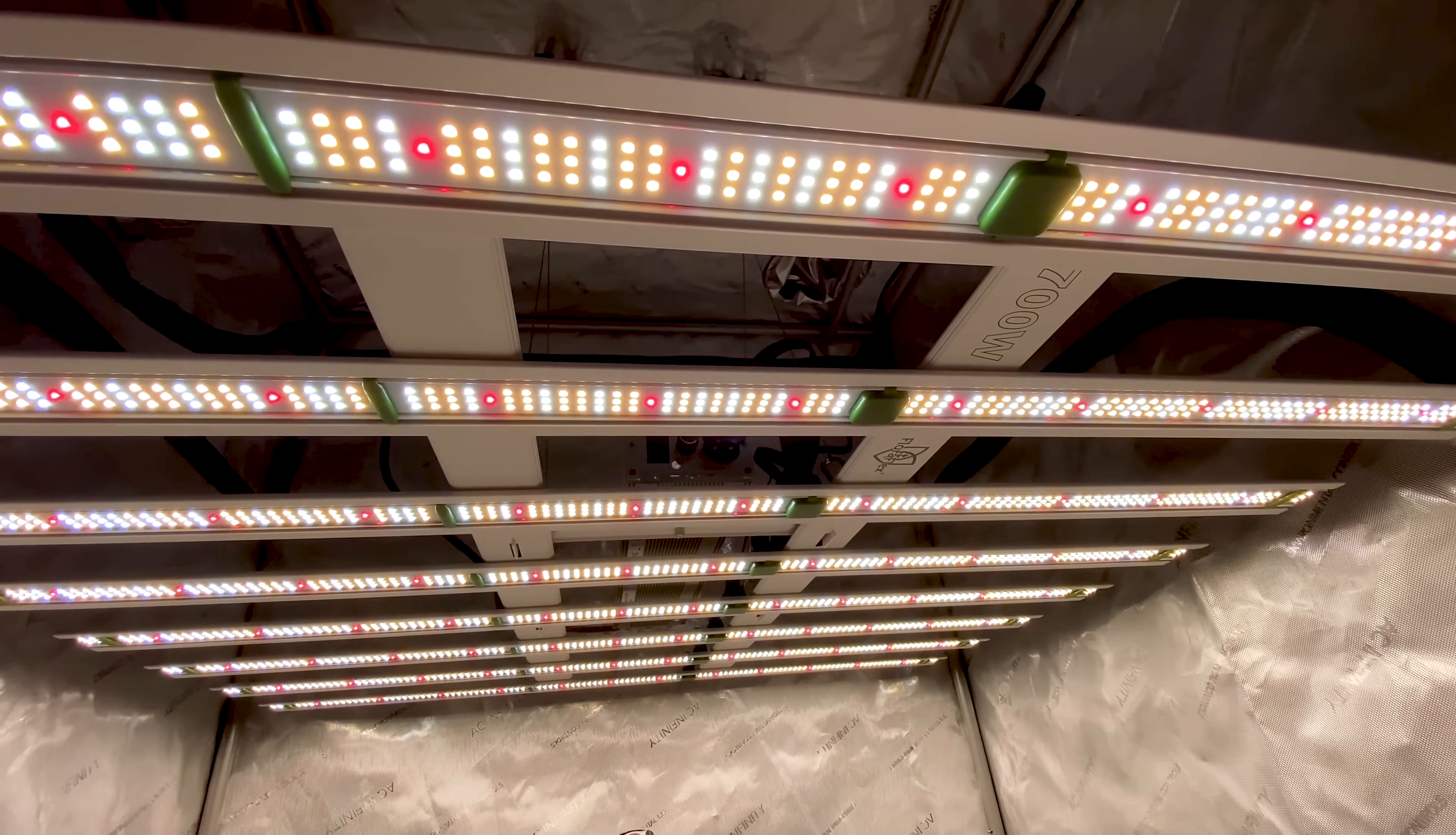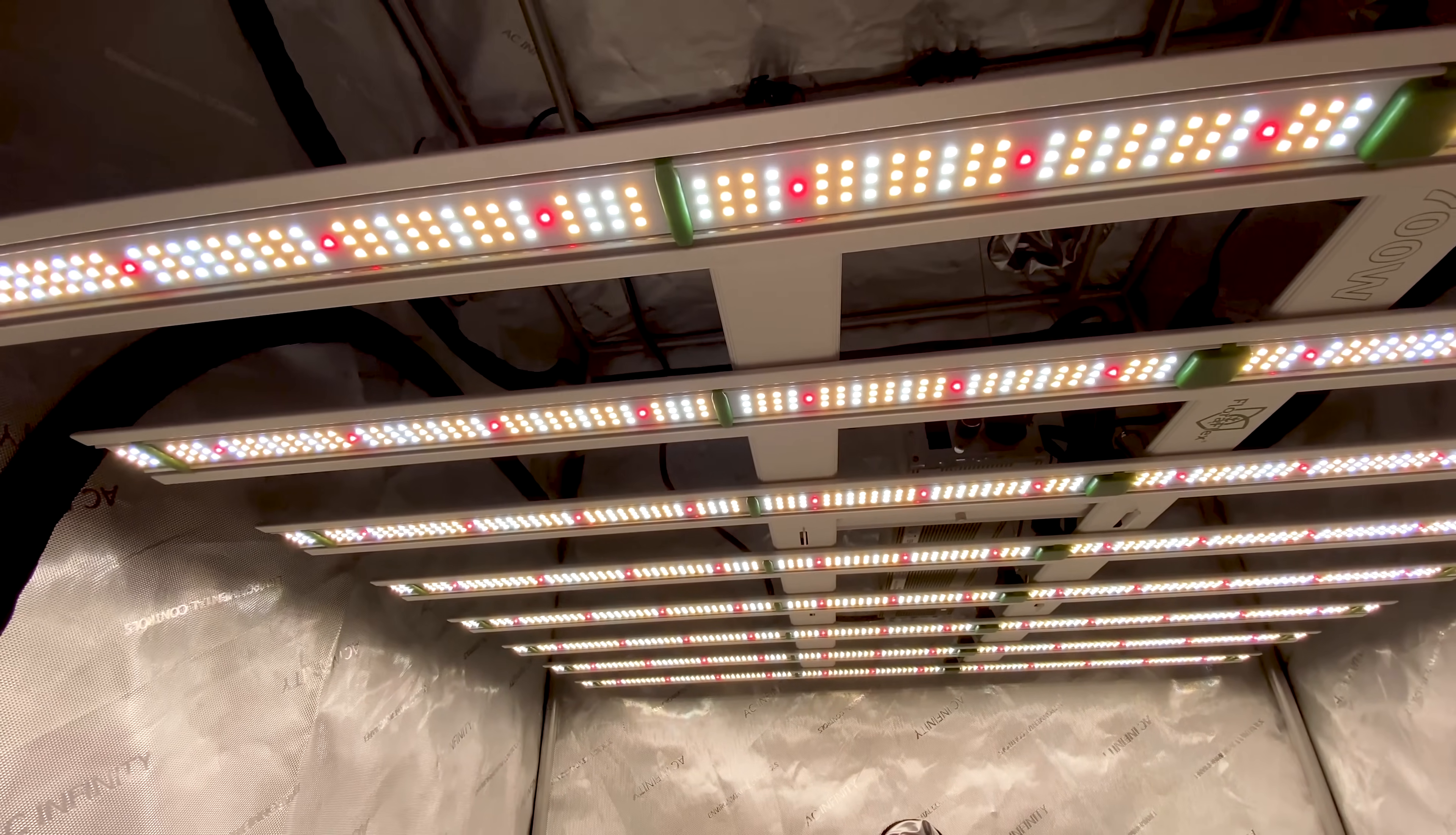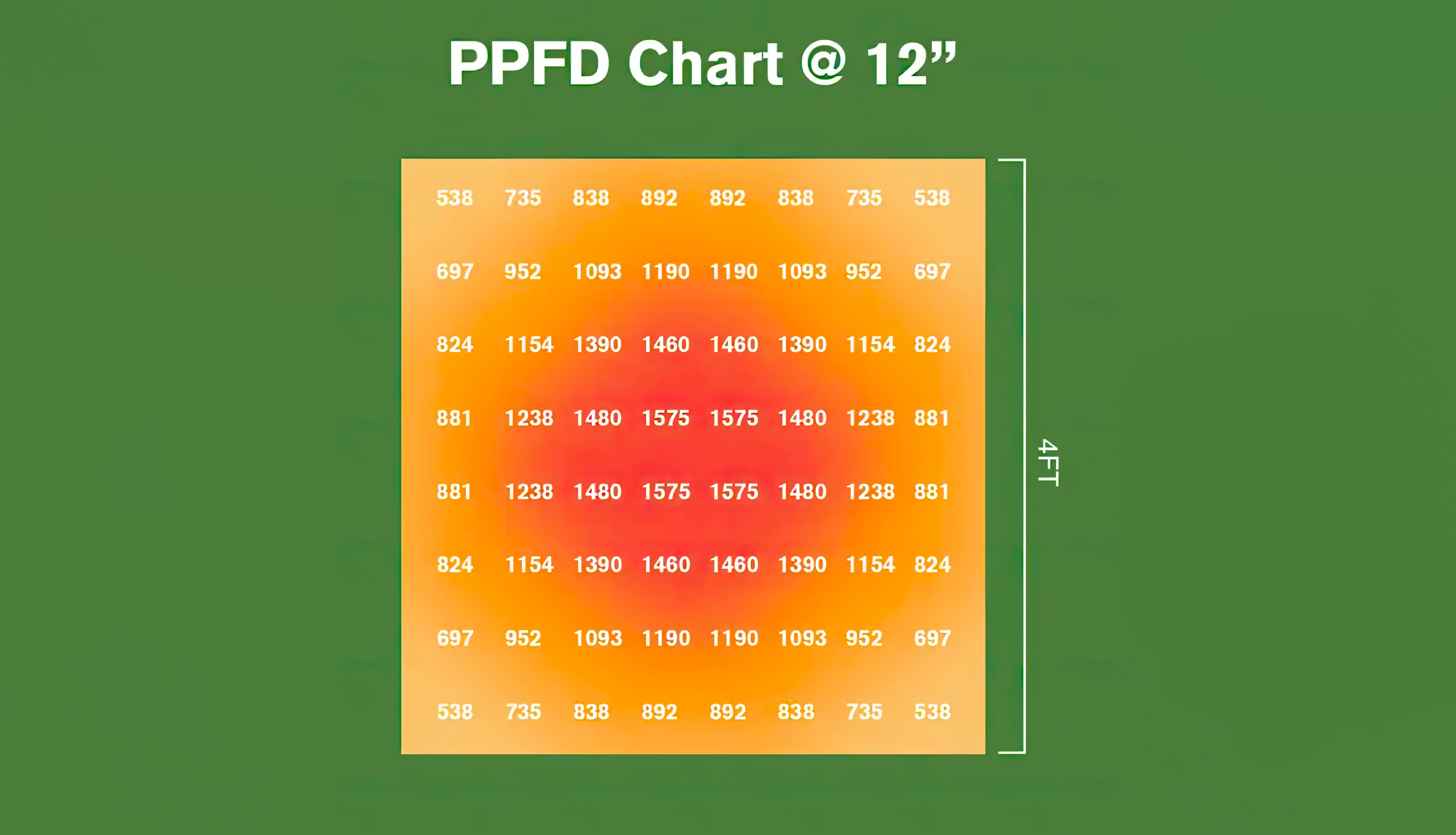This LED grow light ensures deep canopy penetration and uniform par distribution. According to FloraFlex's par map, the light delivers a maximum PPFD of 1575 at 12 inches. The readings look pretty good but you may want to hang the light higher for better uniformity and less intensity if you're not using CO2.